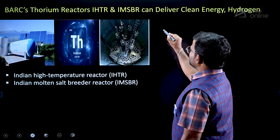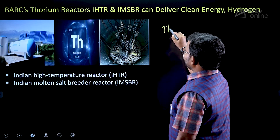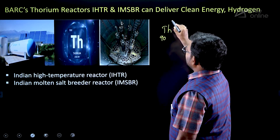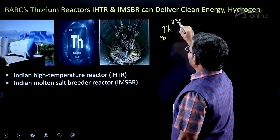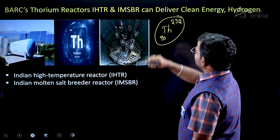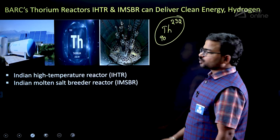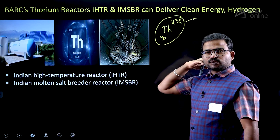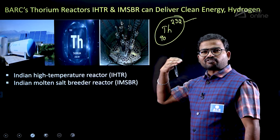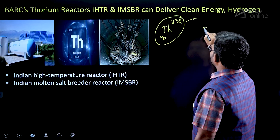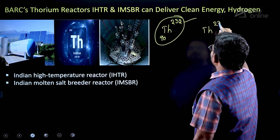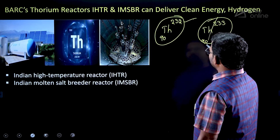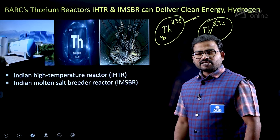First of all, consider thorium: its atomic number is 90. Naturally it occurs as Th-232 (thorium-232). Thorium also has different types of isotopes including Th-233, but the major naturally occurring form is Th-232.